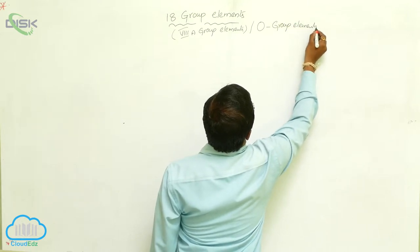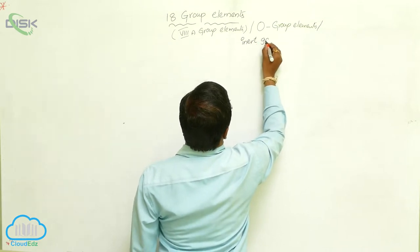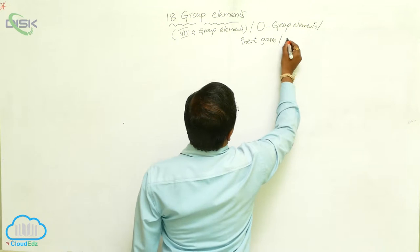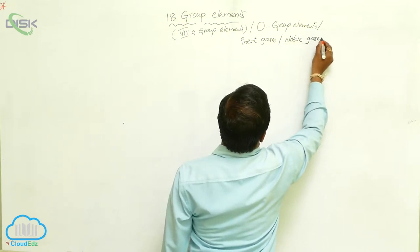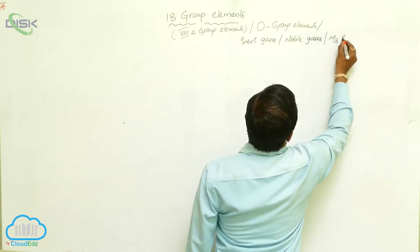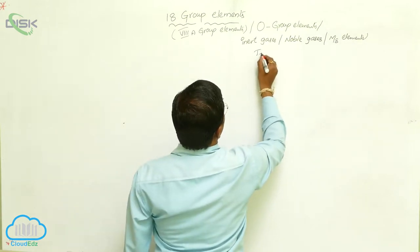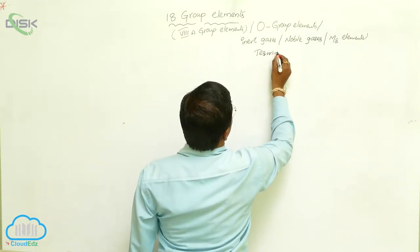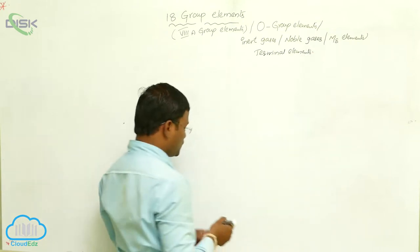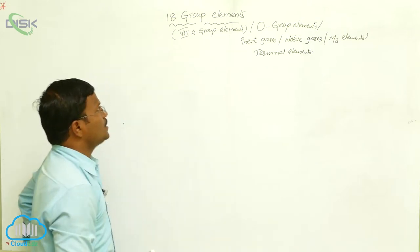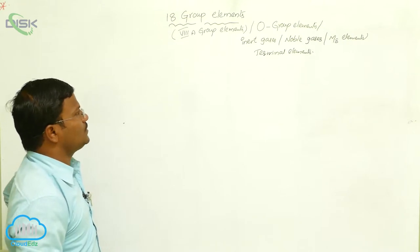Elements are inert gases or noble gases or M-eight elements. 18th group elements are terminal elements. So wide variety of names proposed for 18th group elements. Let us have what are all these names available for 18th group elements.